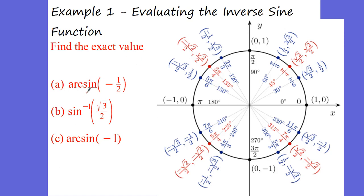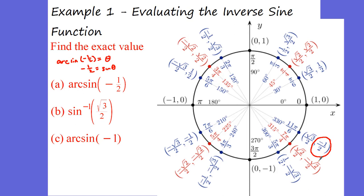We're finding the exact values of arcsine of negative 1 over 2. If you did that on your calculator, arcsine of negative 0.5, you would get negative 30 degrees. Your calculator can't really distinguish much past this first quadrant. Now if we look on our unit circle, arcsine of negative 1 over 2 equals some angle. If I flip this, it says negative 1 half equals sine of what angle? Sine of what angle equals negative 1 over 2? That's at 330 degrees or 11π over 6 radians, which is the same as negative 30 degrees.